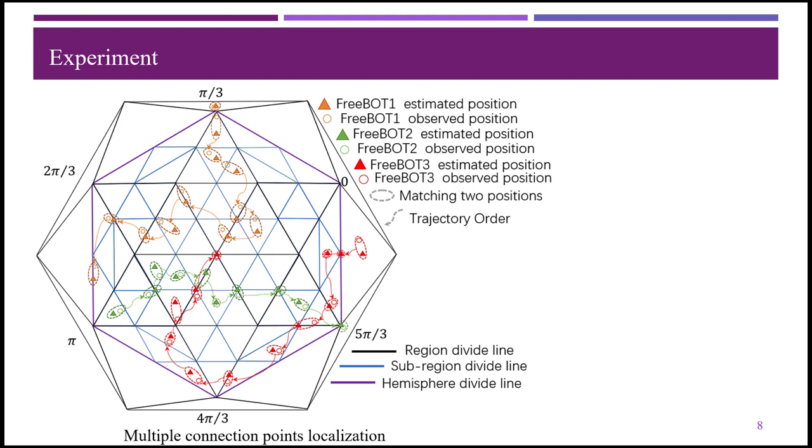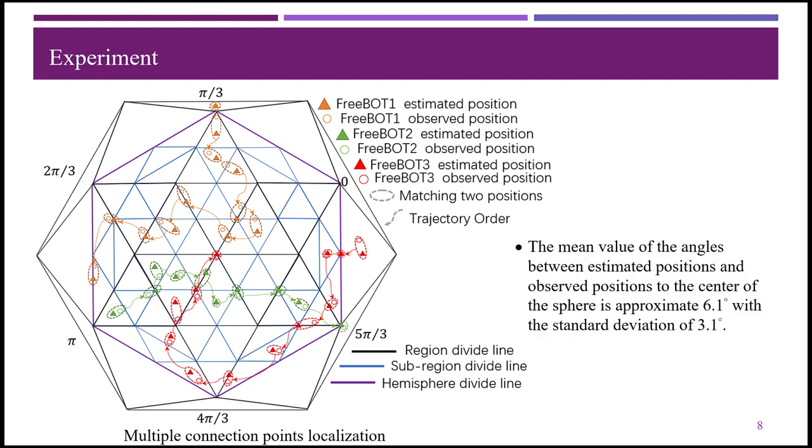For the 34 localization results, 76.5 percent of points are classified to the closest sub-region, while the other points are classified to the second closest sub-region. Assume that the sub-region position is at the center of it, and the mean value of the angles between estimated positions and observed positions to the center of the sphere is approximate 6.1 degrees, with the standard deviation of 3.1 degrees.